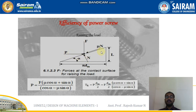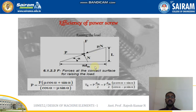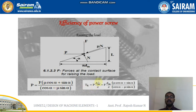The forces at the contact surface for raising the load are analyzed considering the coefficient of friction and the helix angle. The applied force formula is: F multiplied by (μ·cos α + sin α) divided by (cos α − μ·sin α). The torque for raising is T_r = (F·dm/2) multiplied by (μ·cos α + sin α) divided by (cos α − μ·sin α), where F is the axial force, μ is the coefficient of friction, and α is the helix angle.